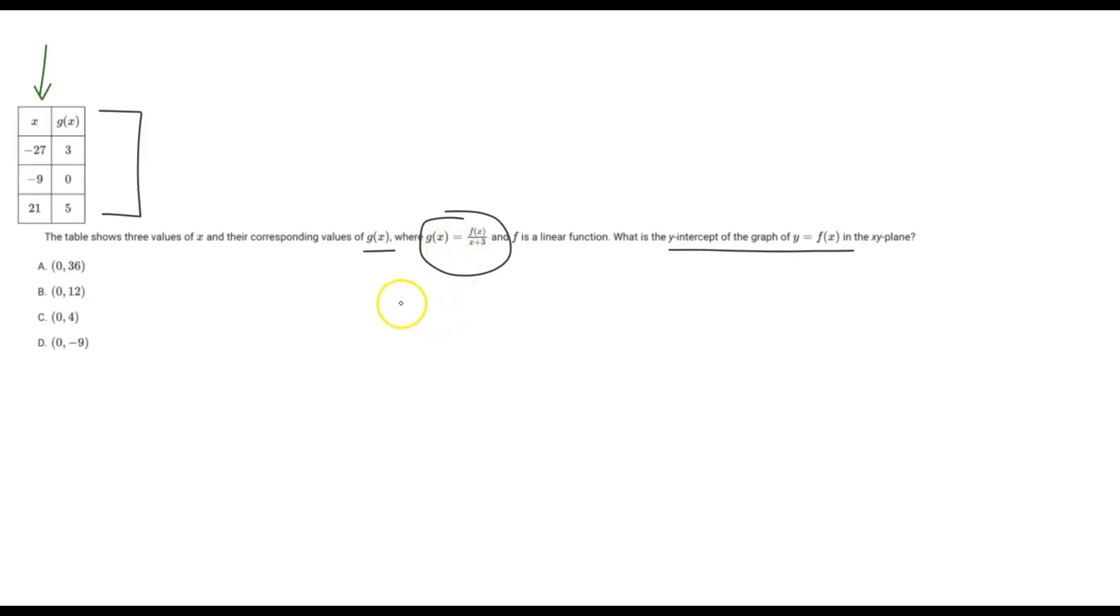Therefore, if we were to write this out, we can write g of, let's just pick any one of these points. Let's just do the top one, negative 27, 3. So the x value here is negative 27.